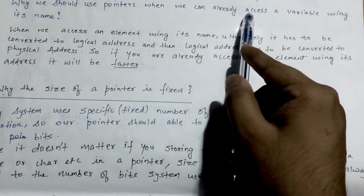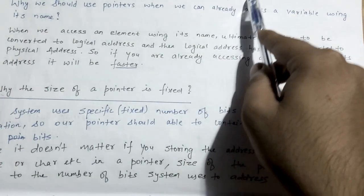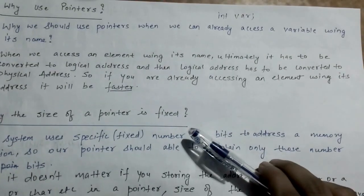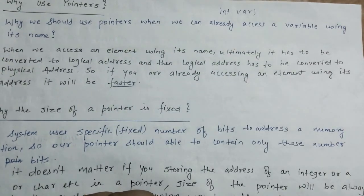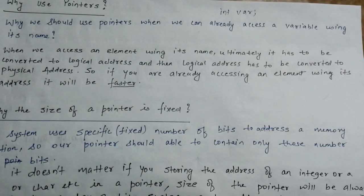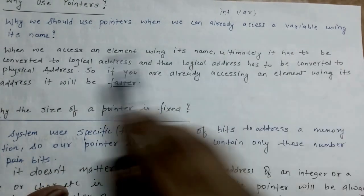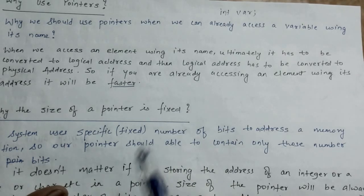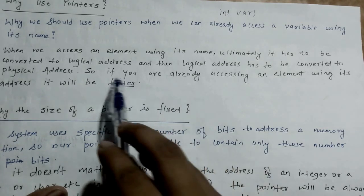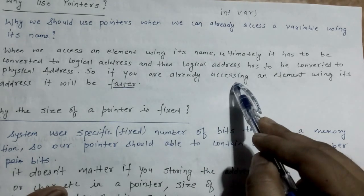We know that we can already access a variable using its name. If we have a variable, for example int var, we can access this variable using its name. So why do we need pointers? We need pointers because when we access an element using its name, it ultimately has to be converted into a logical address and then the logical address has to be converted to a physical address. So ultimately you have to obtain the physical address to access the variable. But if you have a pointer containing the address of that variable, you have the address directly and can access the variable directly without this conversion.